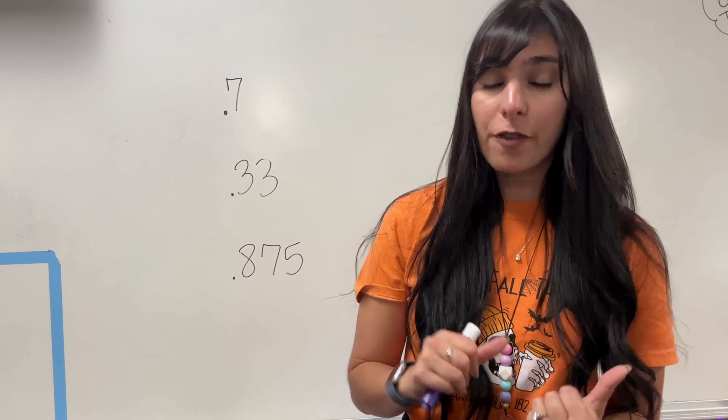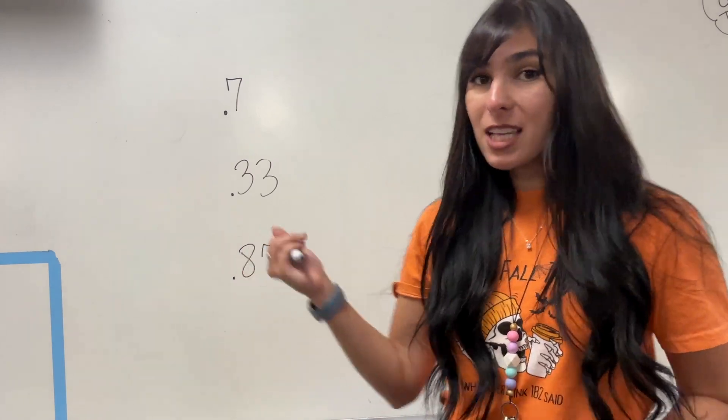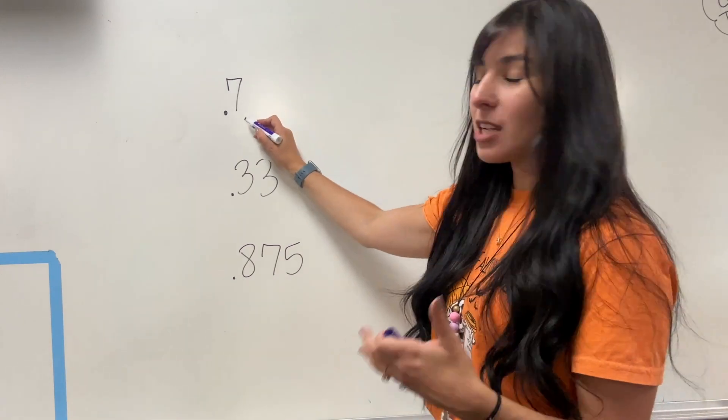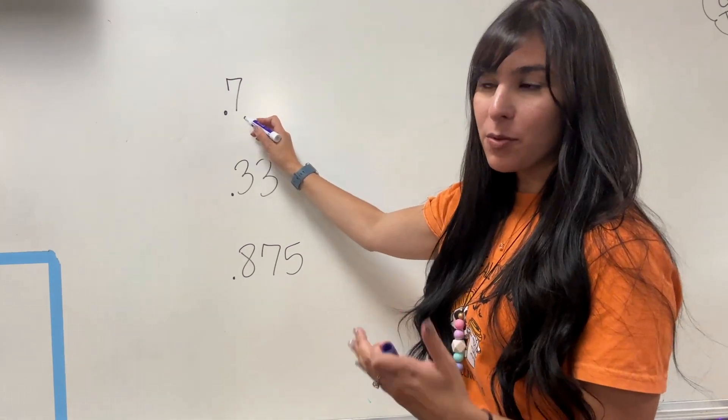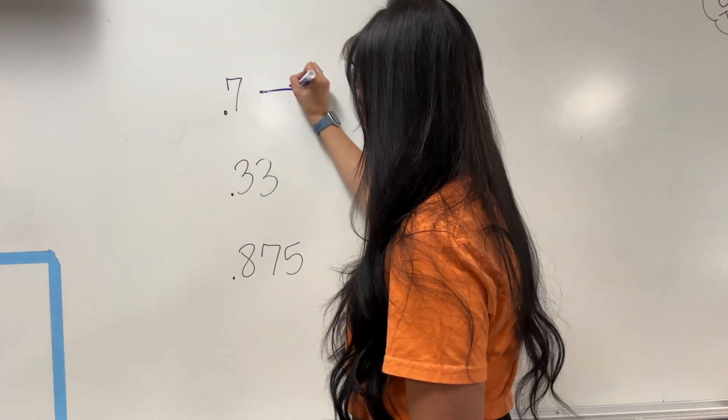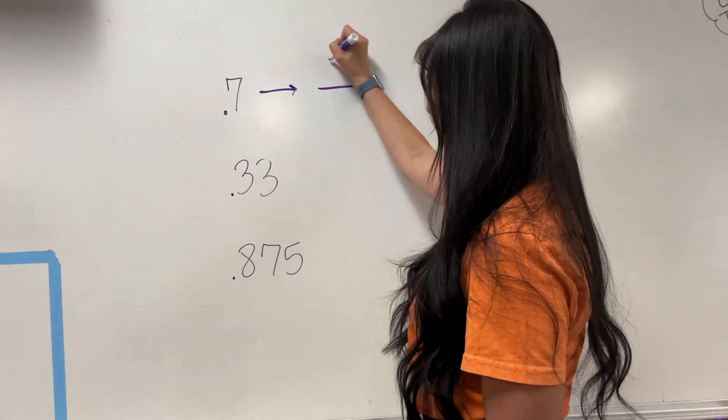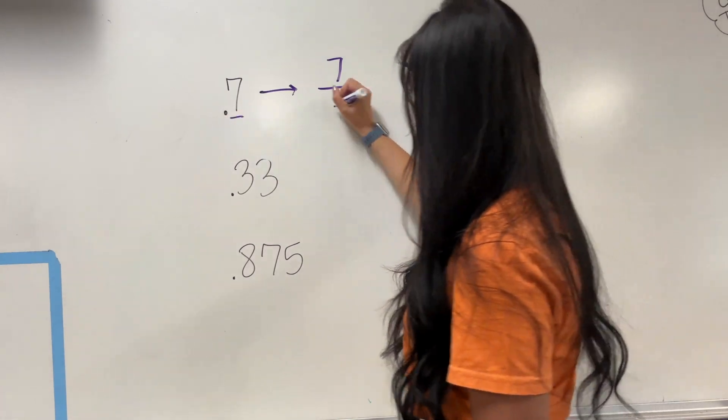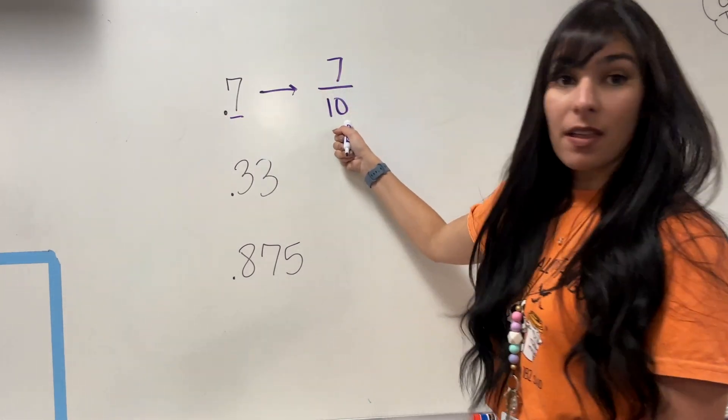When we are converting decimals to fractions, all we're going to do is make sure that the denominator starts with one and then however many numbers come after the decimal is how many zeros also go with that denominator. So for 0.7, I'm going to put 7 on top, and there is one number after the decimal, so 1, 0. That's going to be 10.